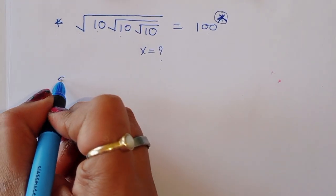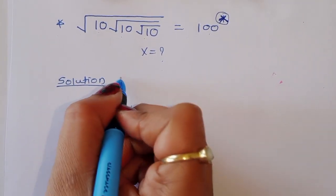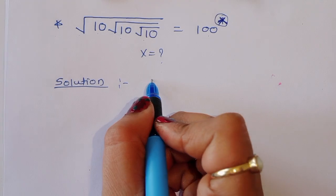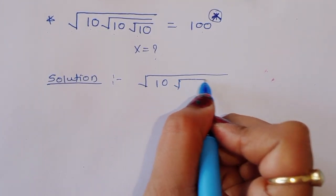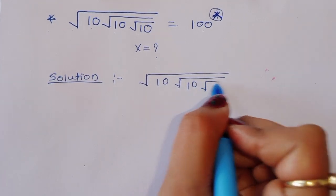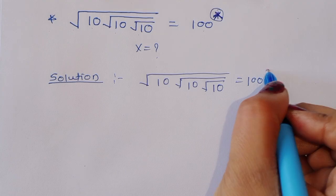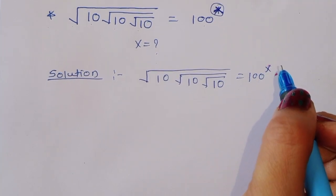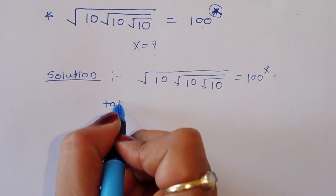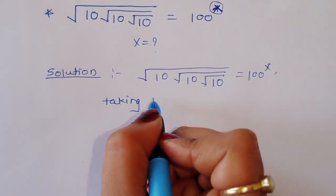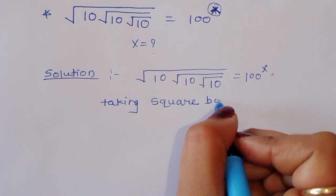Let's see the solution. What is given here? Square root of 10, square root of 10, square root of 10 is equal to 100 raised to x. Now we can take square — taking square on both sides.